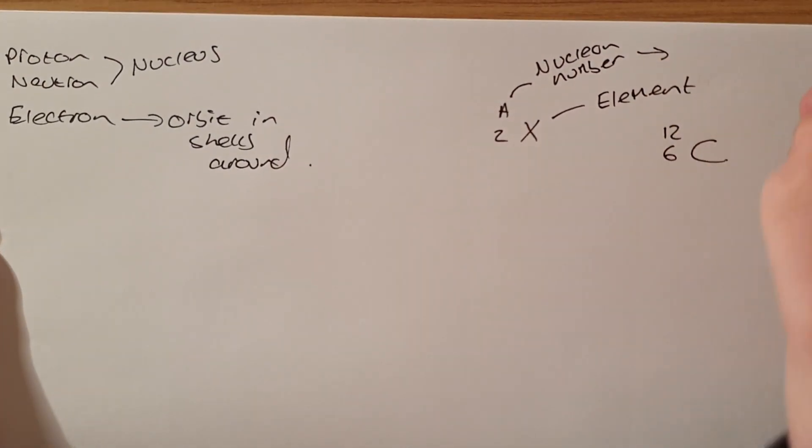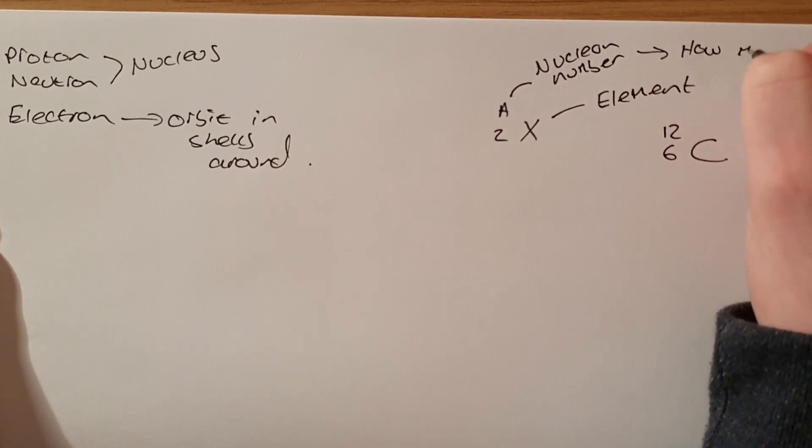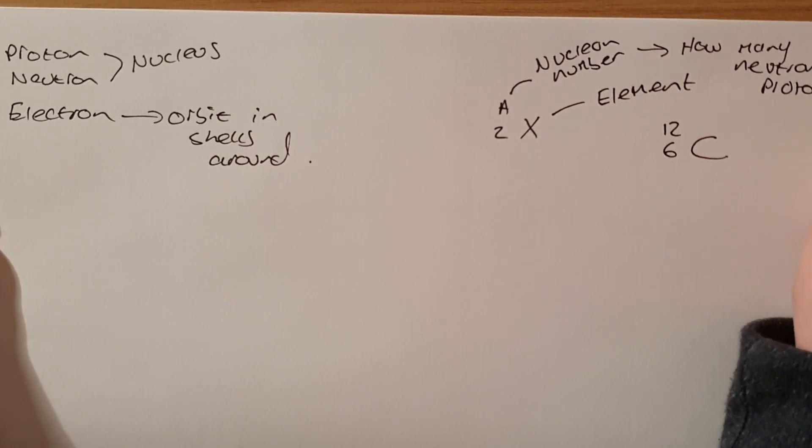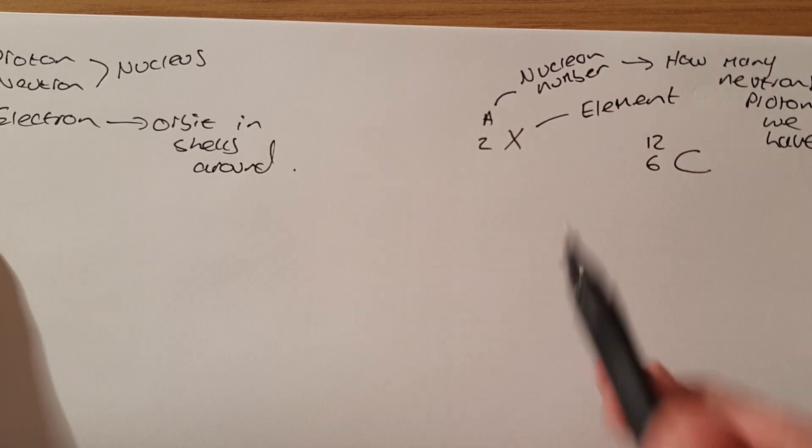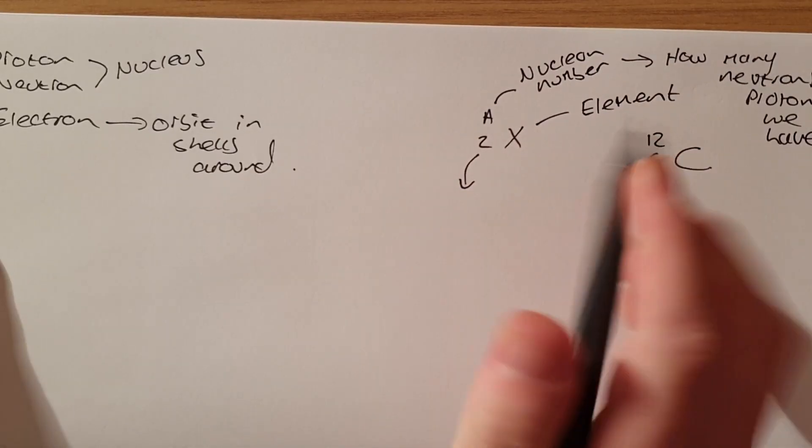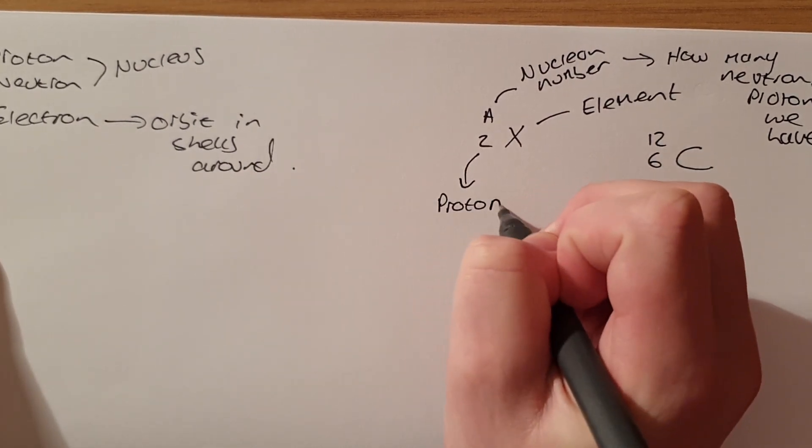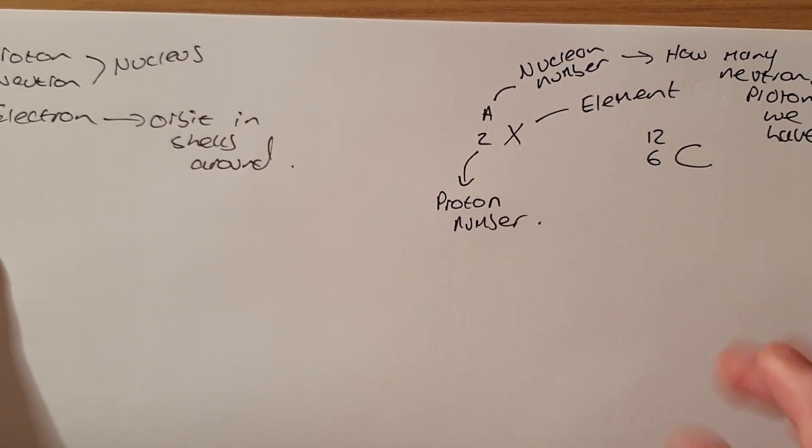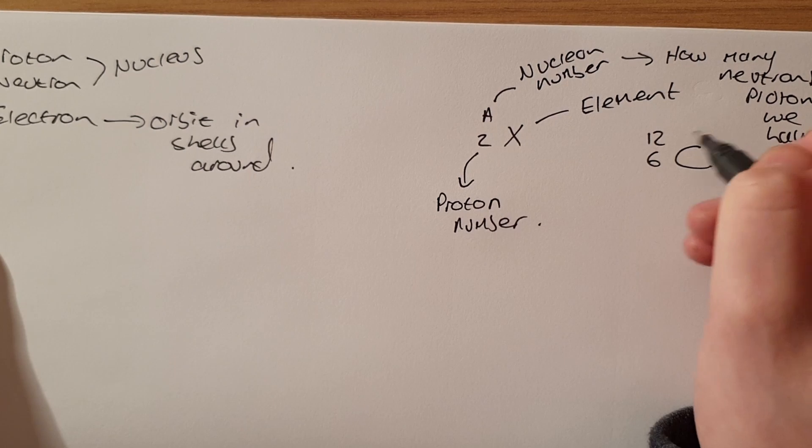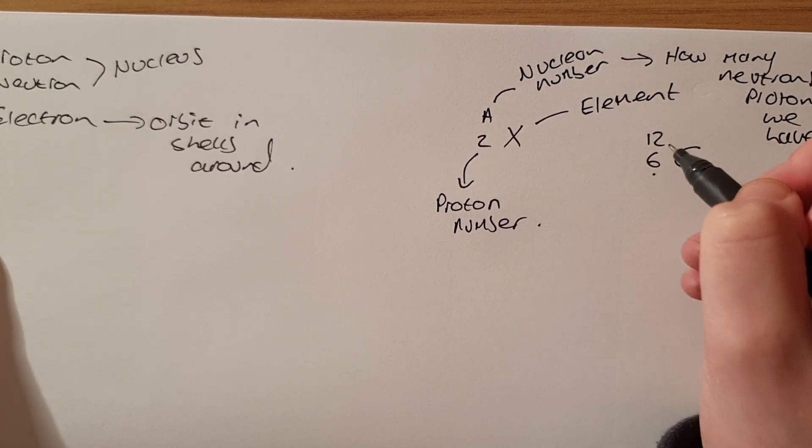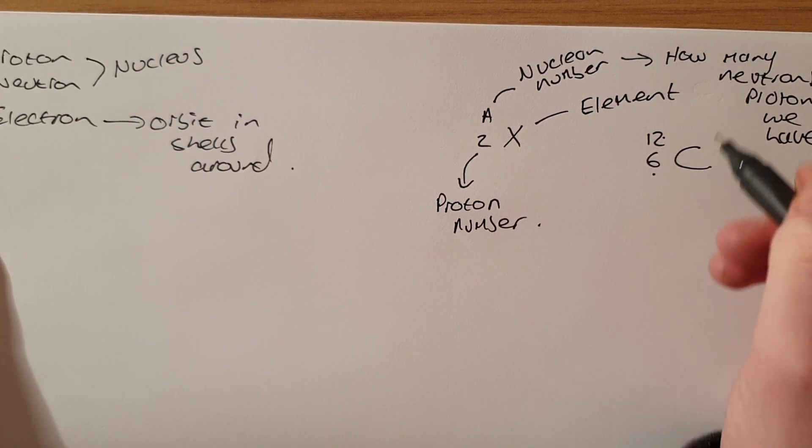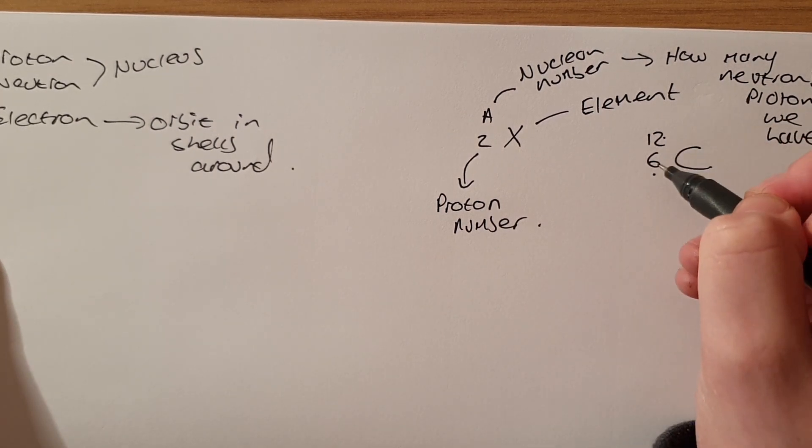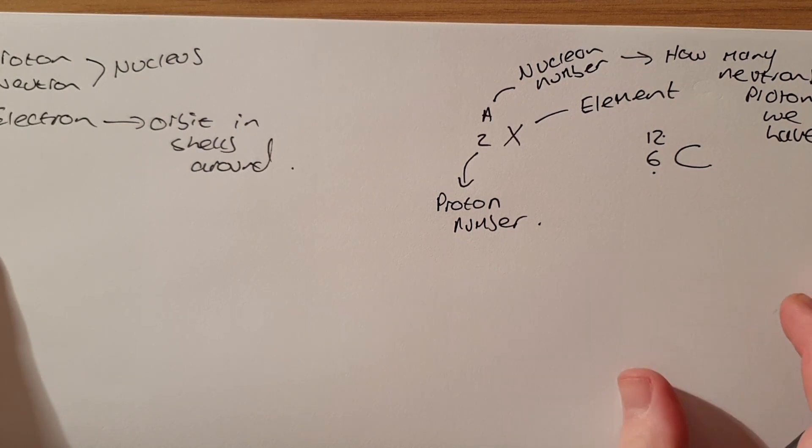Our Nucleon number tells us how many neutrons and protons we have. A new concept, Nucleon number is a key term at this part of the unit. Z is our proton number. So if we have a look at our example of carbon 12, we know the element is carbon. We know there are six protons and we know there are 12 Nucleons. To work out the number of neutrons we obviously take our proton number from our Nucleon number which will give us six neutrons in this case.